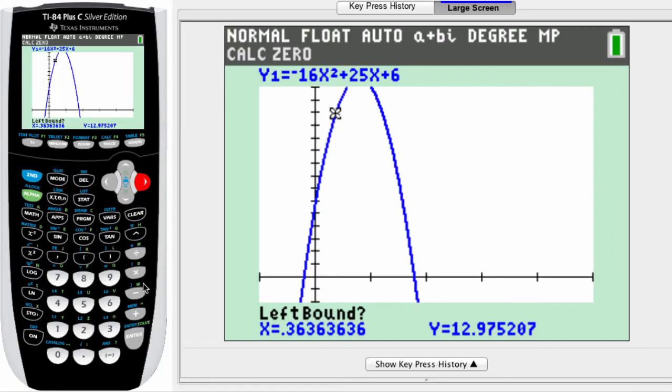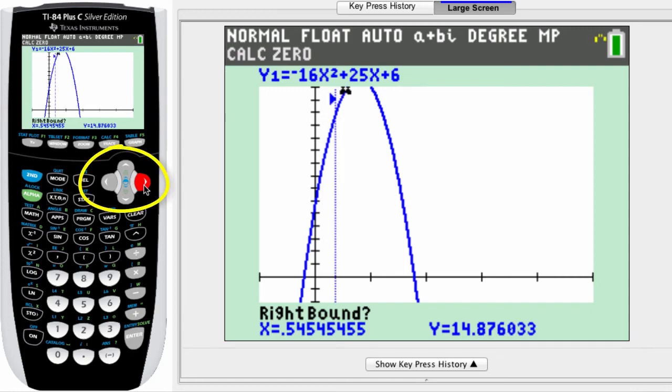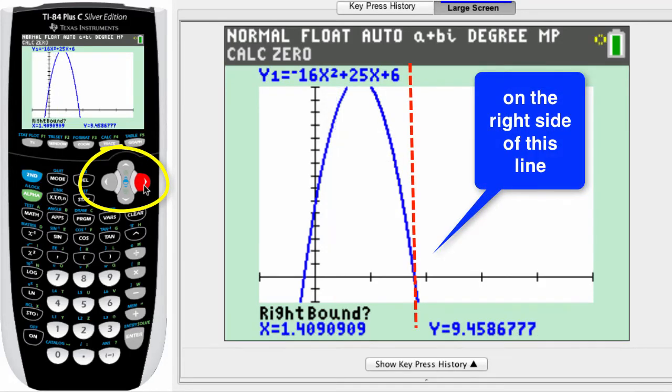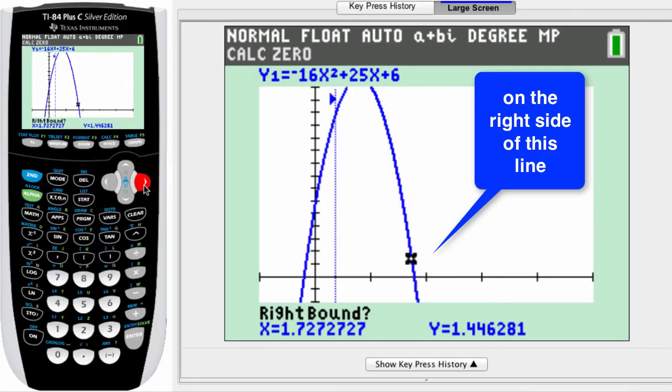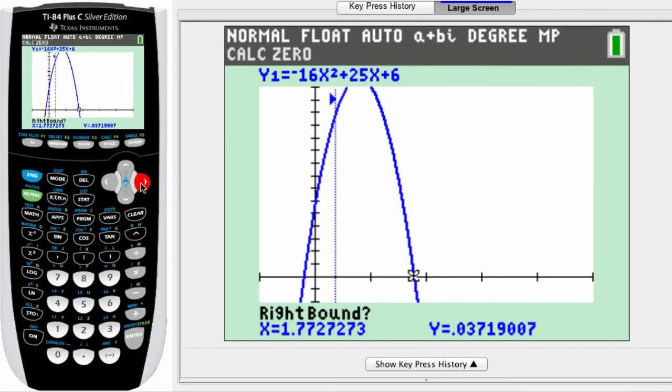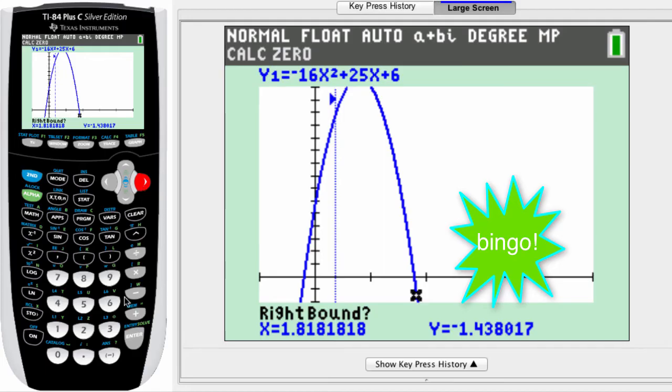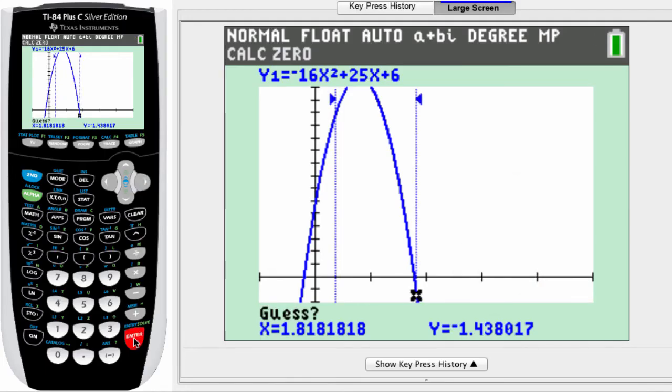So right there is fine. Hit enter and then use the right-facing directional arrow key and click it as many times as you need to in order to bring this little x here anywhere to the right of where it's crossing the x-axis. So not there, not there, and just a little bit more should be fine.